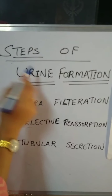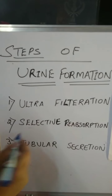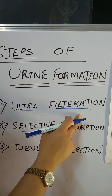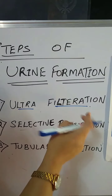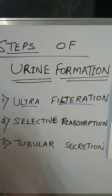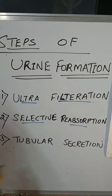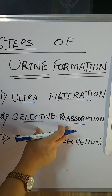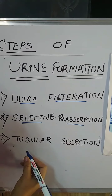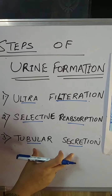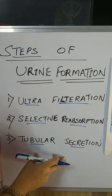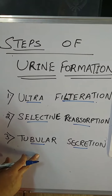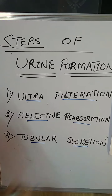Let us discuss the important steps of urine formation. There are three major steps. First is ultrafiltration, which takes place at the junction of the glomerulus capillaries and Bowman's capsule, where toxic waste is filtered from the blood into the tubules of the nephron. Second is selective reabsorption — the absorption of substances important for the body, taking place in the tubular part. Third is tubular secretion — secretion of toxic waste material through the tubular part of the nephron.